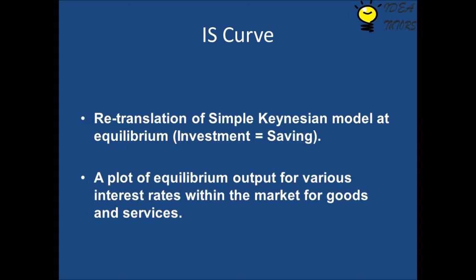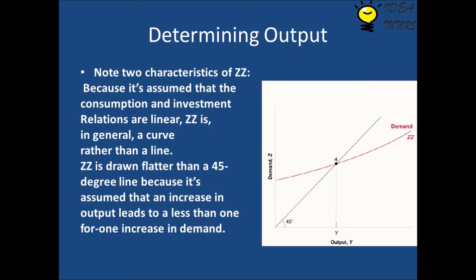The IS curve is a plot of equilibrium output for various interest rates within the market for goods and services. ZZ is the aggregate demand curve and the 45-degree line is the AS curve. Note two characteristics of ZZ: because consumption and investment relations are assumed to be linear, ZZ is in general a curve rather than a line, and ZZ is drawn flatter than the 45-degree line.